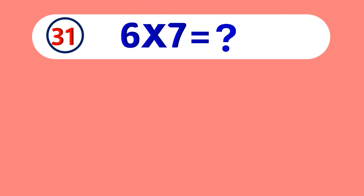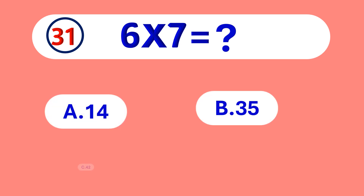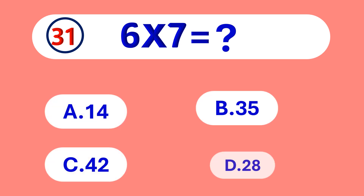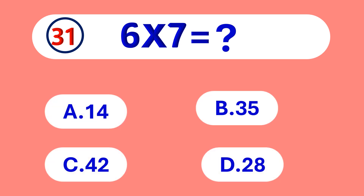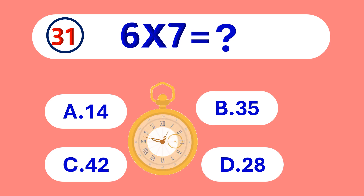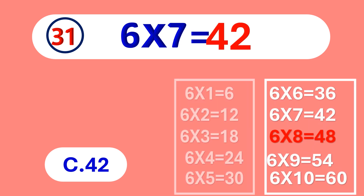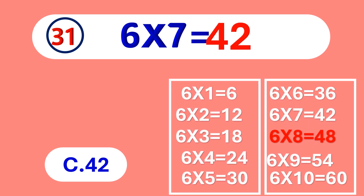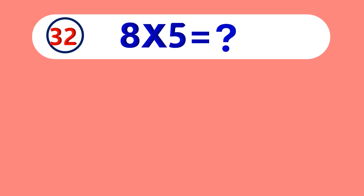6 times 7 is equal to... 42. 6 times 7 is 42.